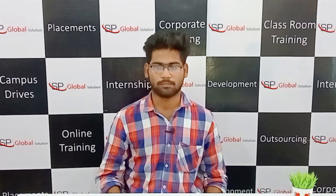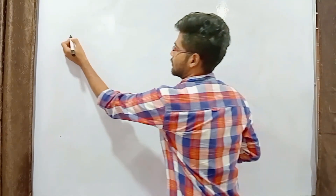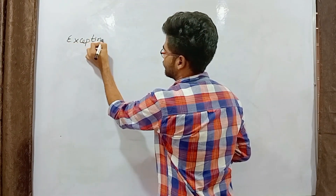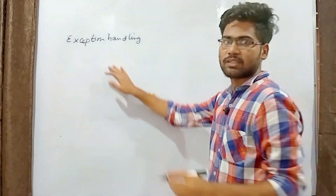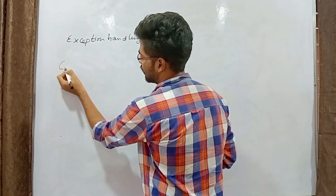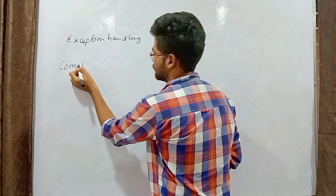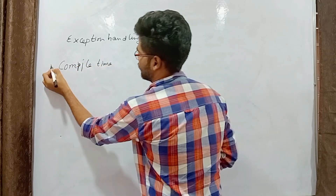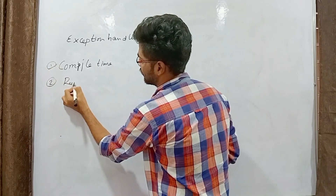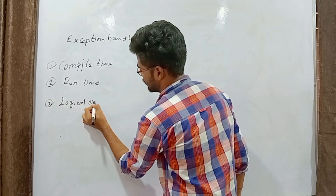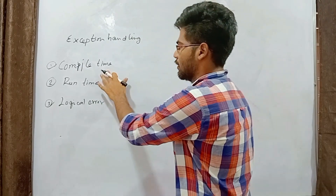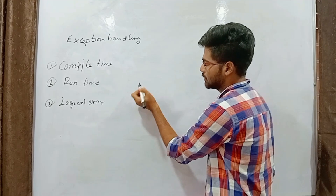Okay Ajay, I will give you one program to write with an explanation. Write a Java program for exception handling. I will explain exception handling. Compile-time error is a basic error — just like syntax errors, for example, System.out.println("Hello") missing a semicolon. These types of errors that occur at compile time are compile-time errors.